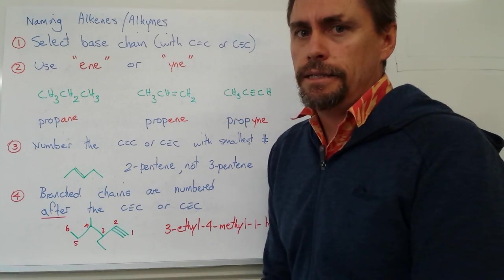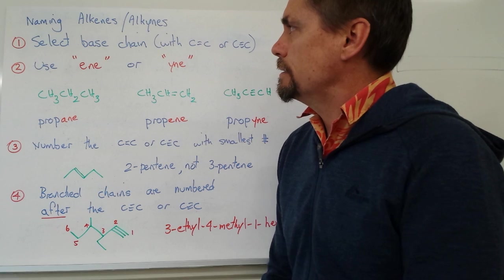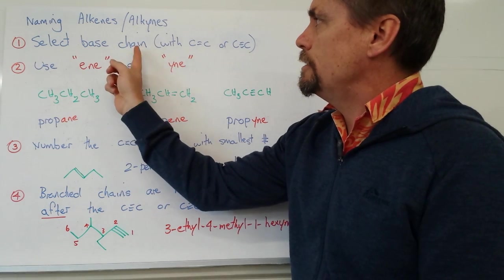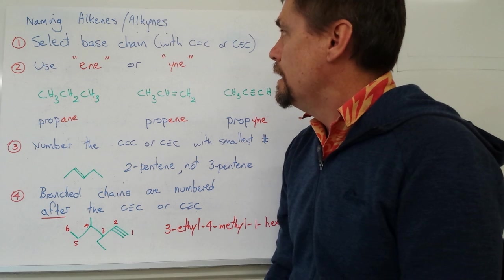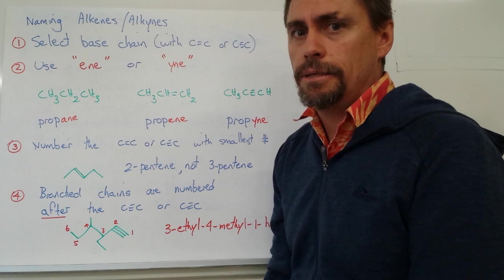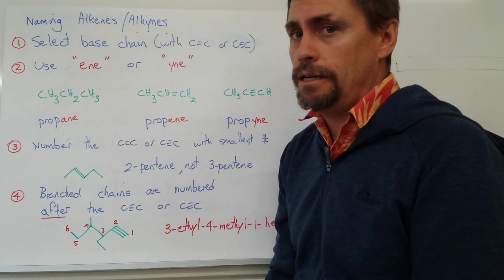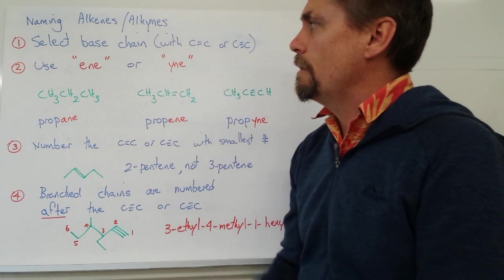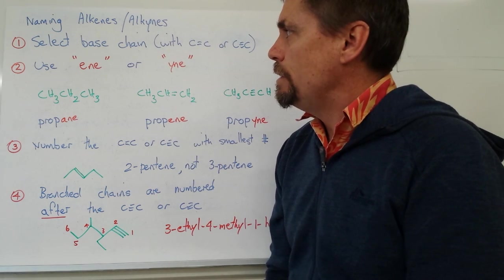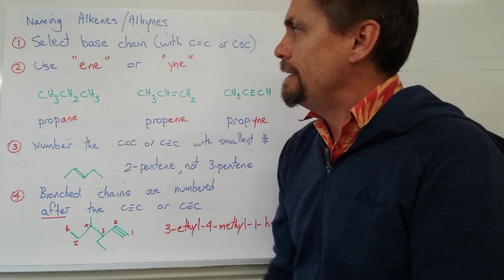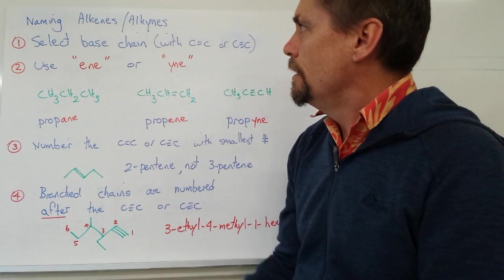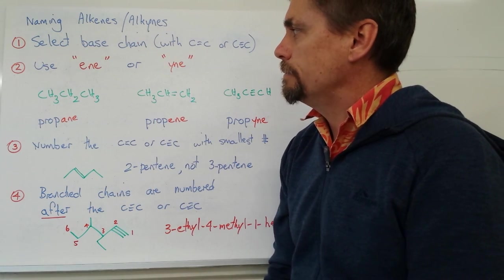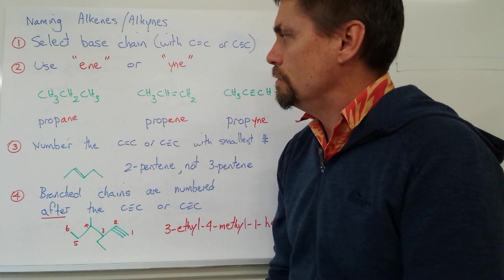Let's have a look at how to name alkenes and alkynes. The first thing we need to do is select the base chain that contains the carbon-carbon double bond for an alkene, or the carbon-carbon triple bond for an alkyne. We then use the suffix '-ene' for an alkene or '-yne' for an alkyne.